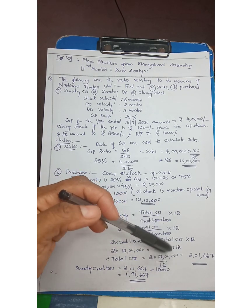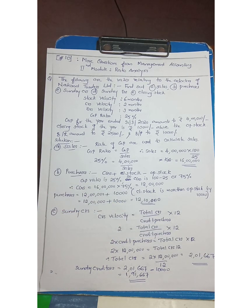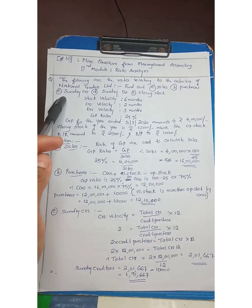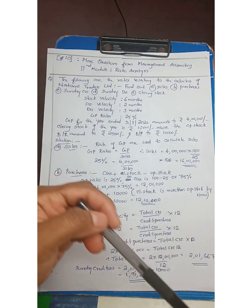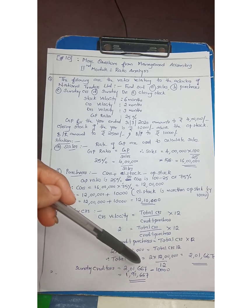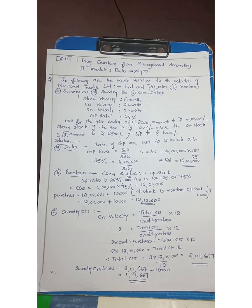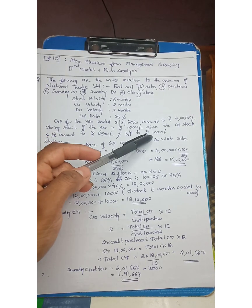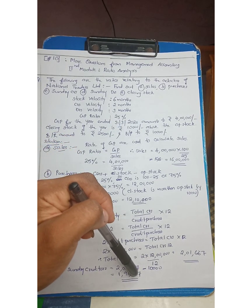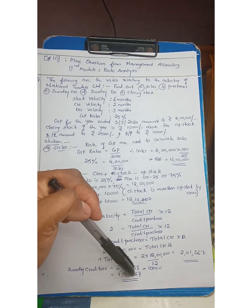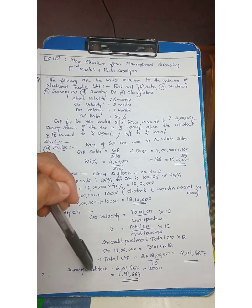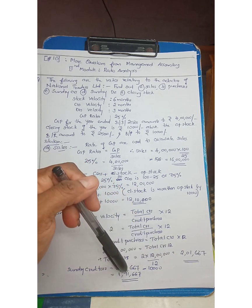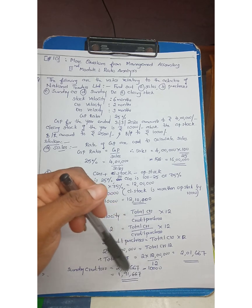That is 2,16,667. So total creditors is 2,16,667 minus 10,000 gives 1,91,667. This will be the value of sundry creditors.